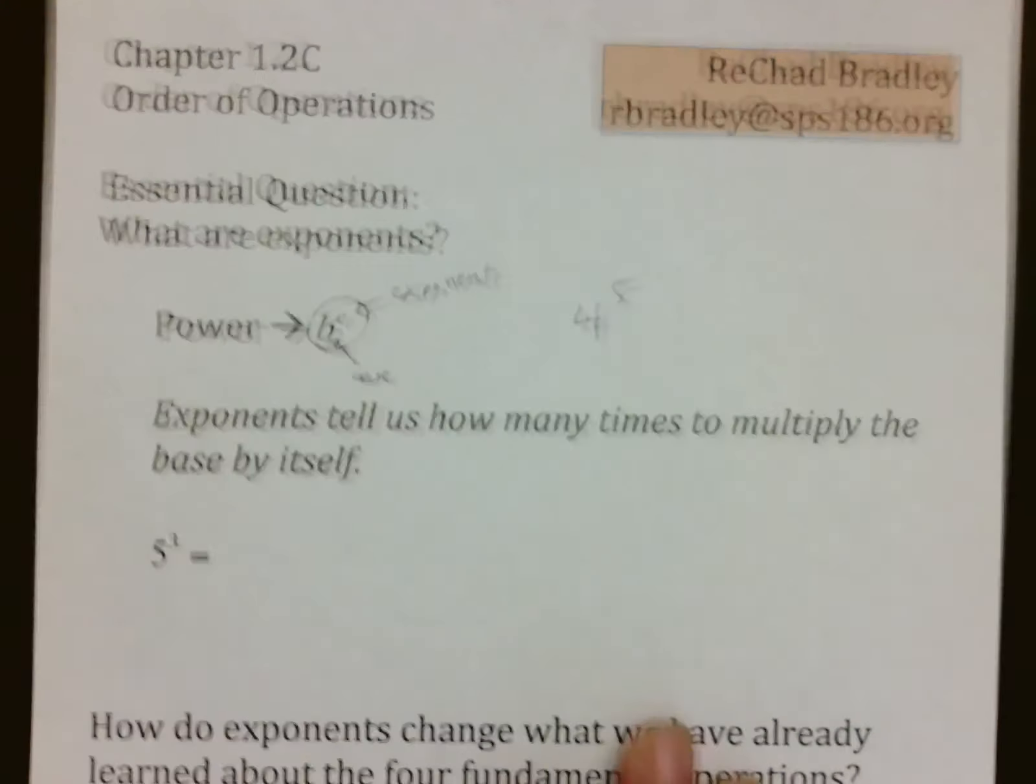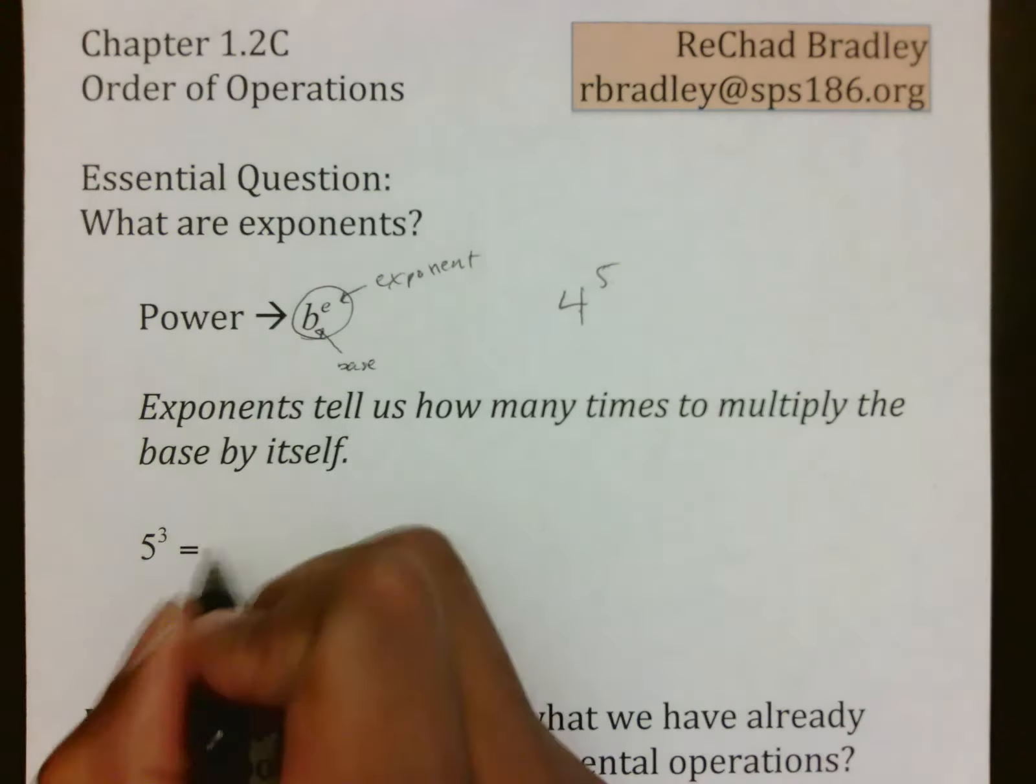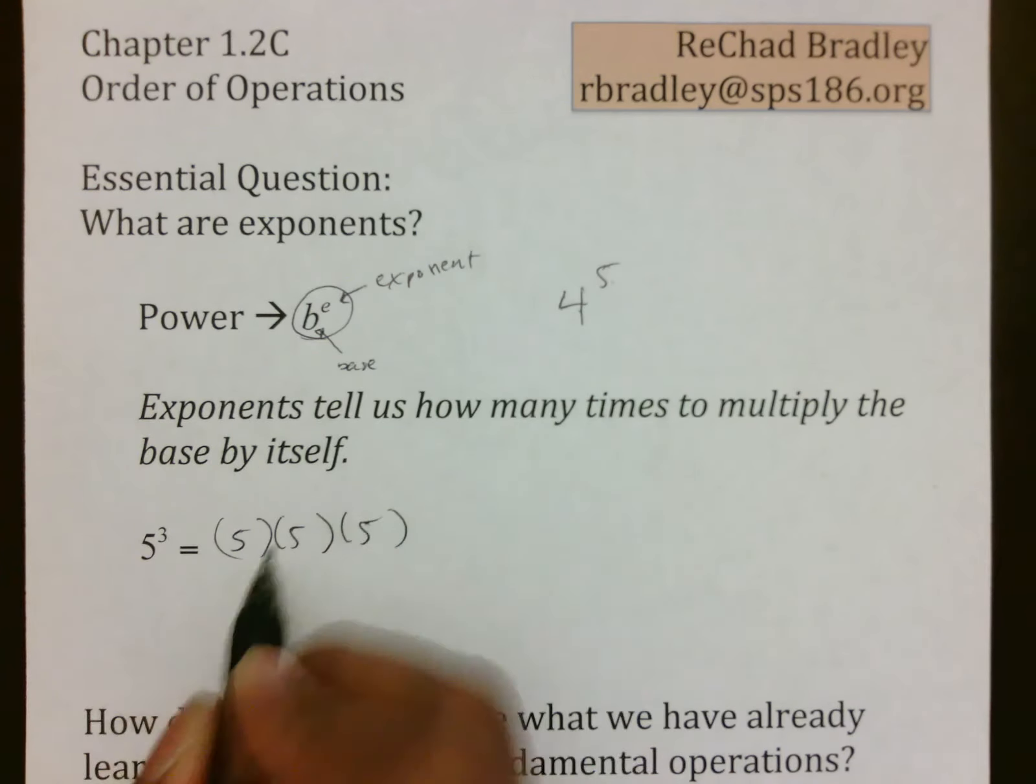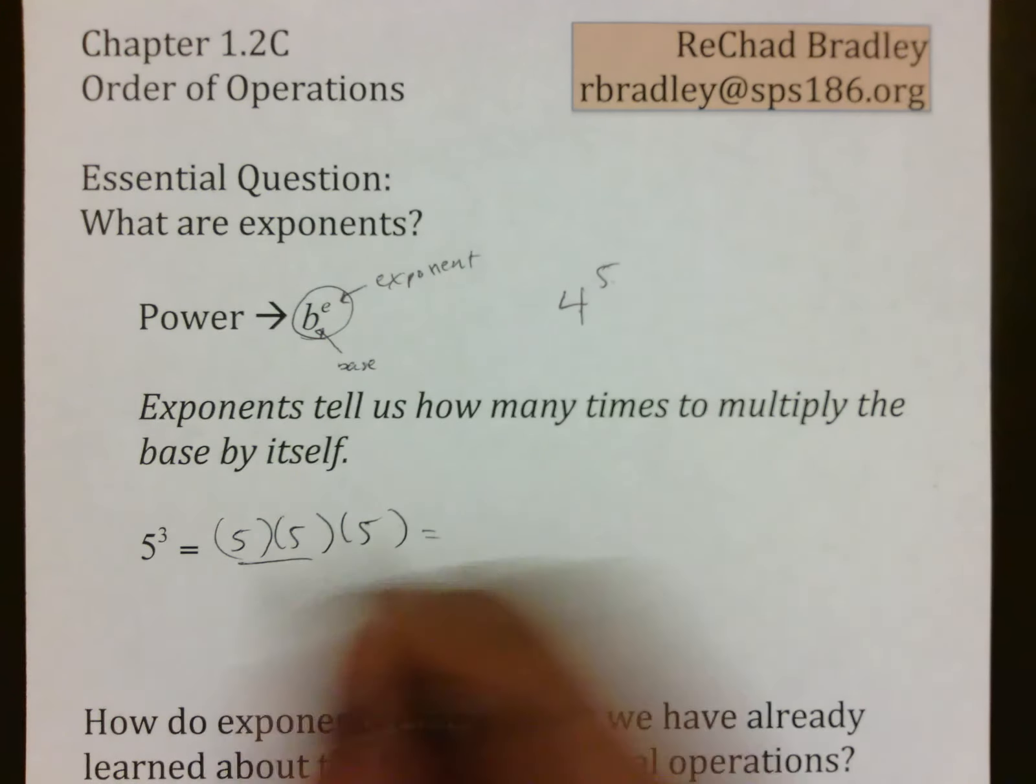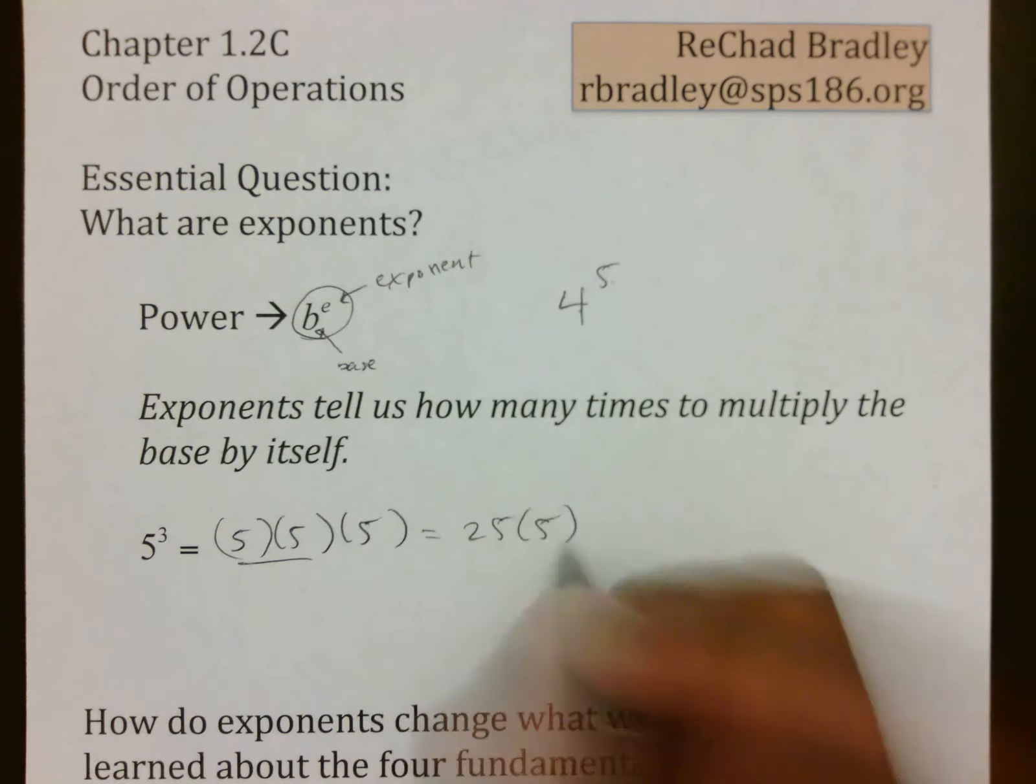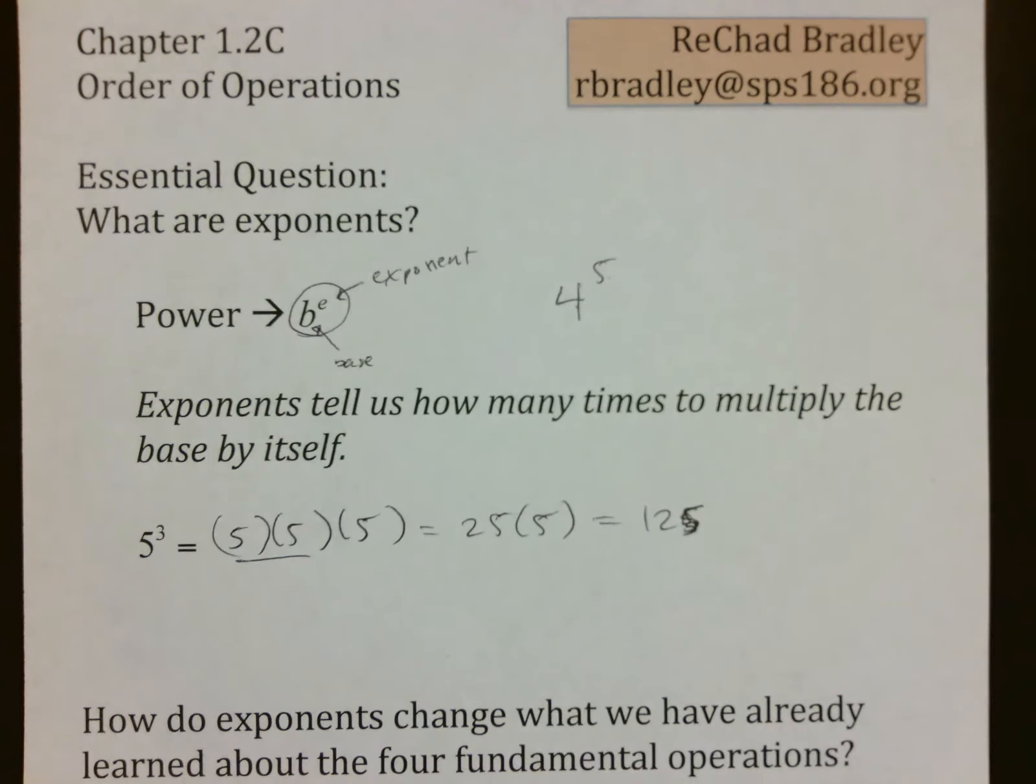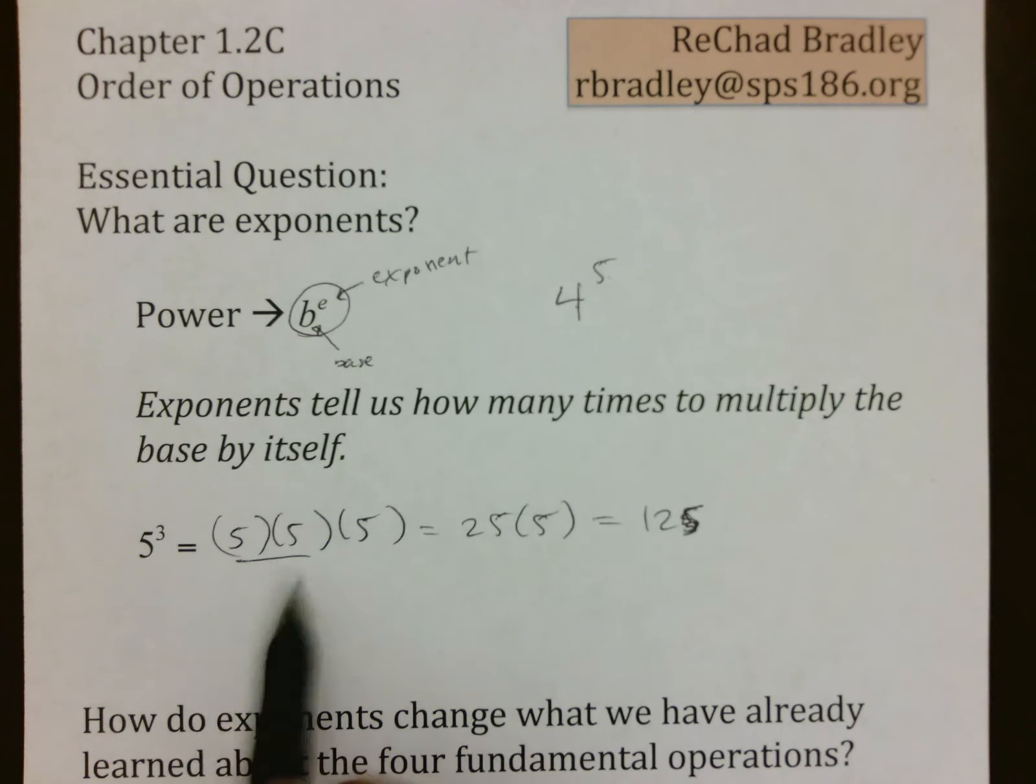What the exponent does for us is it tells us how many times to multiply the base by itself. So five to the third would mean that you want to do 5 × 5 × 5. Notice this says you need three of them, and that is what you get. So then you simplify by doing your multiplication here, which is 25 × 5, and that would equal 125 altogether. So anytime you see an exponent, it's telling us to multiply this three times, expand it out, and work it out from there.